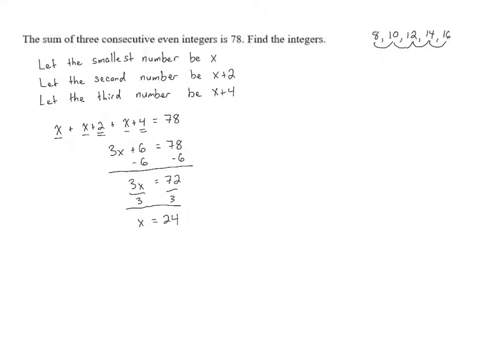So when we go up to our let statements, we see the smallest number is x, which is 24. But the next one is x plus 2, 24 plus 2 is 26. And then the last one was x plus 4, and 24 plus 4 is 28.